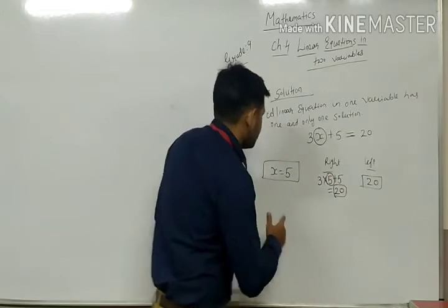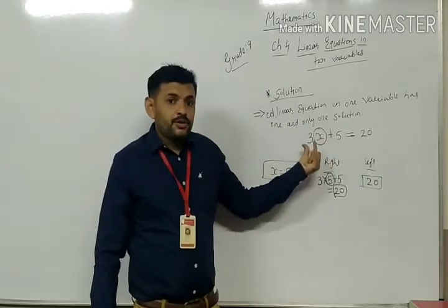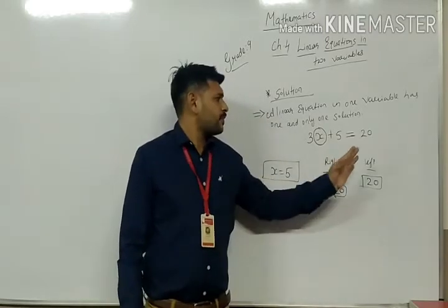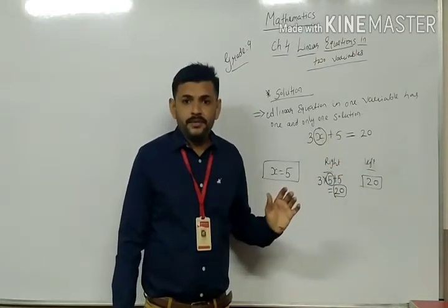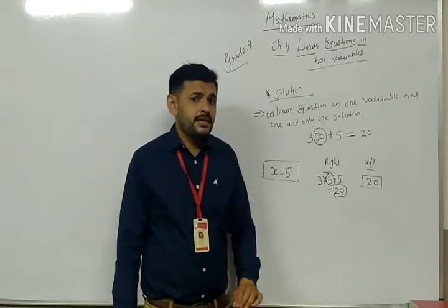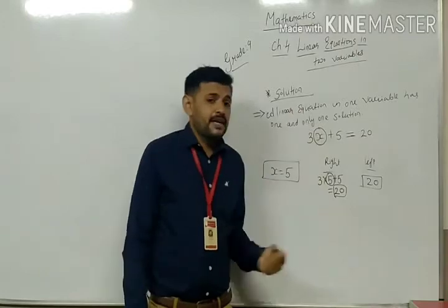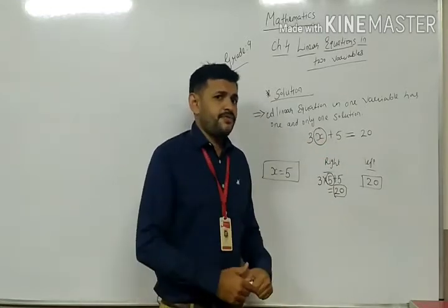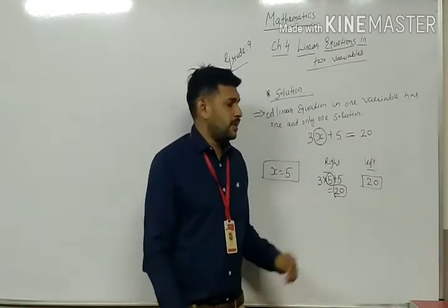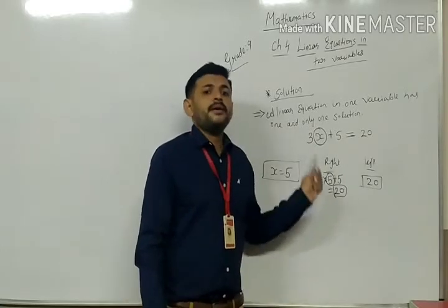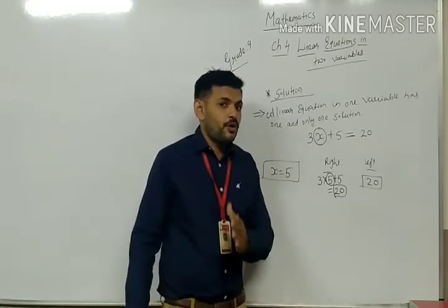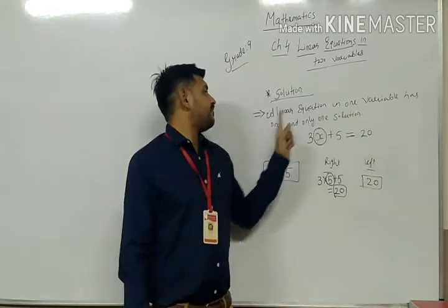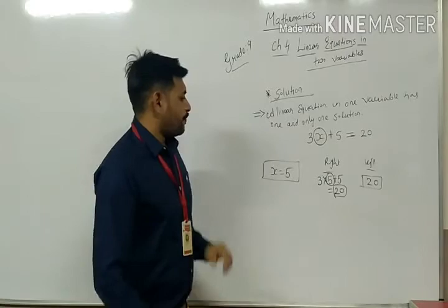You substituted 5, so the solution is x equals to 5. In a linear equation in one variable you have only one variable, that is x. If you put any other value — say minus 5, you get minus 10; put 2, you get 11; put 7, you get 26 — none of them equal 20. Only x equals to 5 works, which is why a linear equation in one variable has one and only one solution.